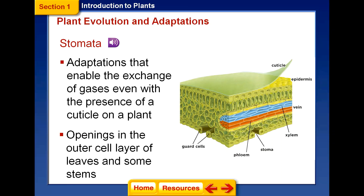Stomata are controlled by guard cells depending on temperature, and they are adaptations that enable the exchange of gases even with the presence of a cuticle. They are openings in the outer cell layer of leaves and some green stems.